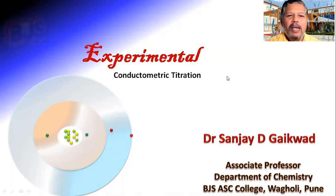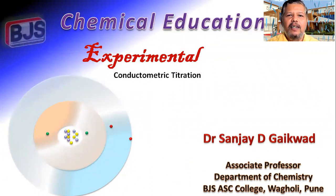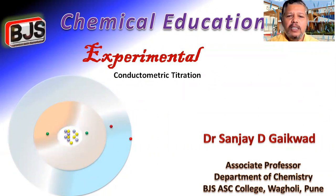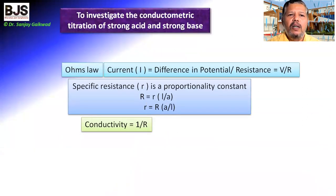Welcome to my chemical education video lecture series. In this video, we are going to see the experimental part related to the conductometer. There are many applications of conductometer. This is one of the applications: the conductometric titration. In this experiment, we have to see the title of the experiment — to investigate the conductometric titration of strong acid and strong base.